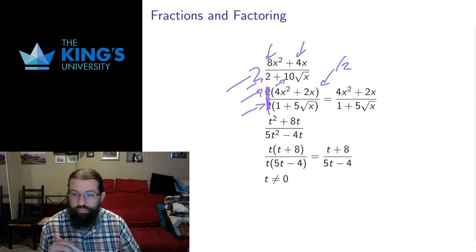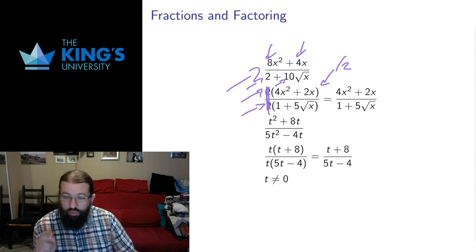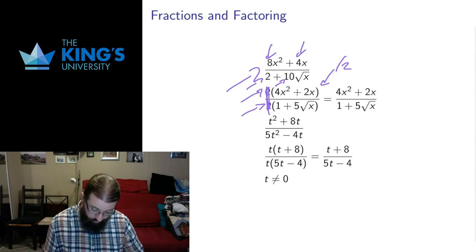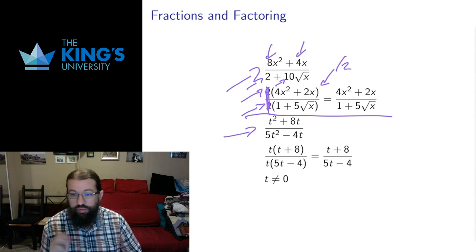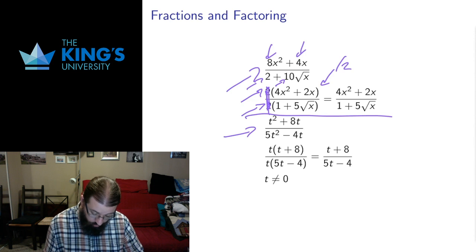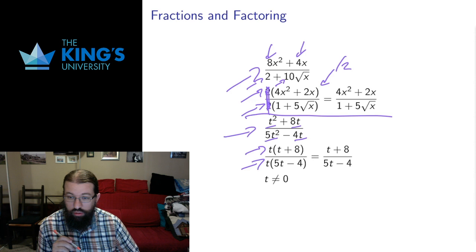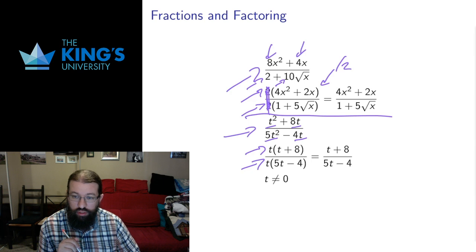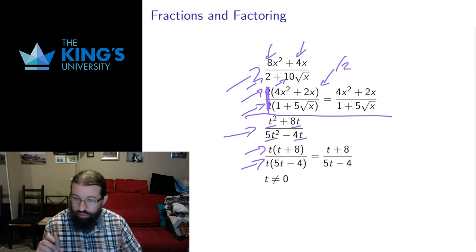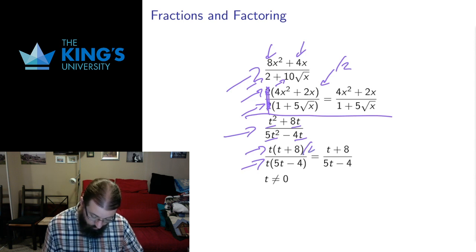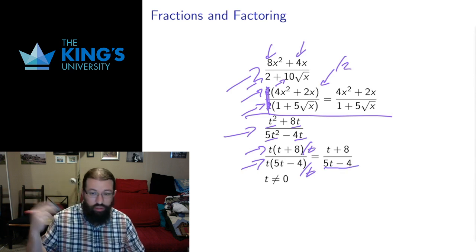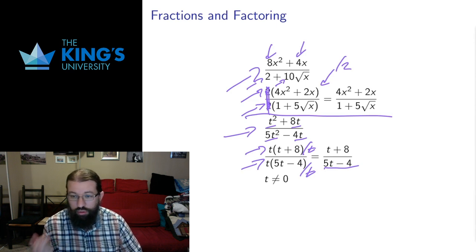The thing you factor out doesn't need to be a number — it can be a variable. In this second example, the variable t is a factor of both numerator and denominator: t goes into t squared, 8t, 4t, and 5t squared. So I can factor t out of both. The numerator becomes t times (t plus 8), the denominator becomes t times (5t minus 4). Then I cancel the t from numerator and denominator — dividing both by t — to get a simpler fraction.